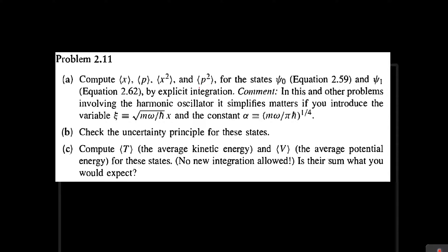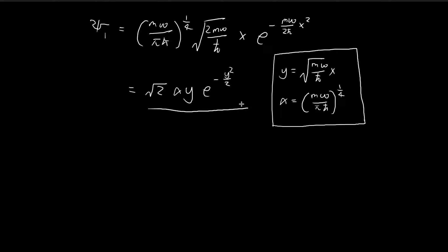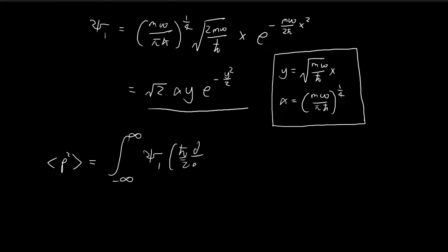Now we're going to find the expected value of p-squared for ξ₁. This is the expression for ξ₁, and we're going to do this substitution as we have been doing for the past three videos. During the substitution, we will arrive at this expression for ξ₁. In order to find the expected value of p-squared, we're going to do this integral — integrate ξ₁ and then apply the momentum operator to ξ₁ two times. All we have to do is evaluate this expression to arrive at the expected value of p-squared.